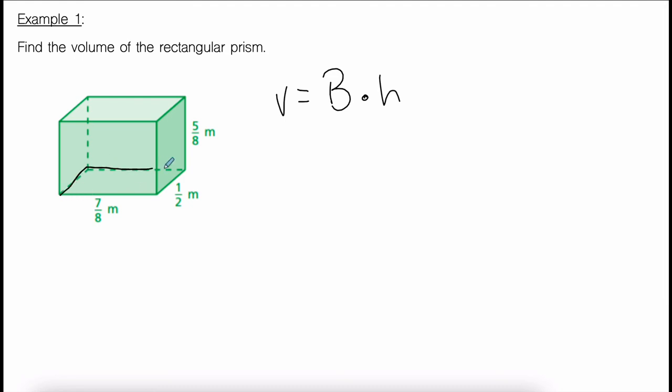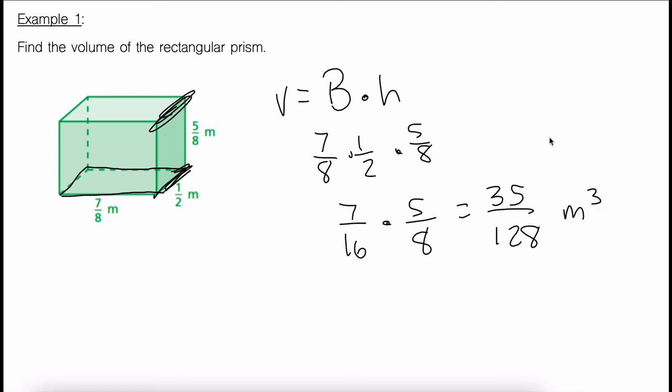All right, hopefully you chose one of the sides as your base. I'm choosing this bottom side as a base, so seven eighths times one half, which is seven sixteenths times the height. The height goes from base to base, which is times five eighths. So I'm keeping everything as fractions. If you're using a calculator, then you could have just had the calculator do all of this for you. But 35 over 128 meters cubed would be your final answer. And hopefully that's what you got.